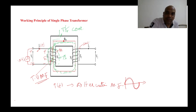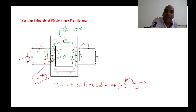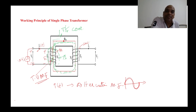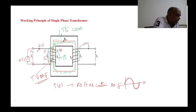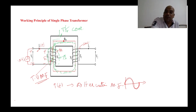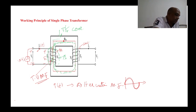So the working principle of a transformer is: when alternating current passes through the primary coil, alternating magnetic field is developed. That alternating magnetic field cuts to the stationary conductor, so EMF is induced. The same alternating magnetic field passes through the transformer core and cuts the secondary coil as well, inducing an EMF in the secondary side. This EMF is called mutual induced EMF.